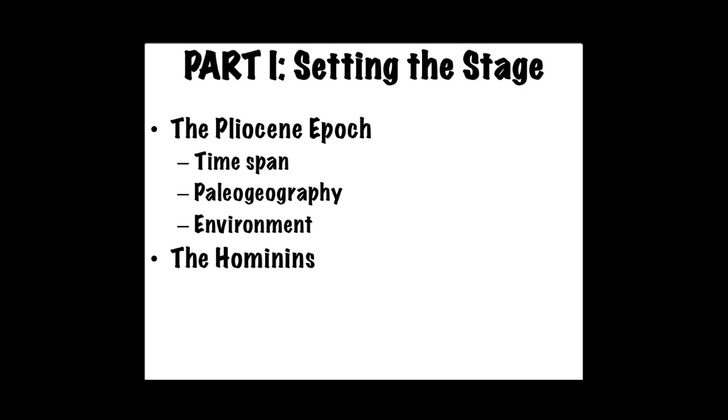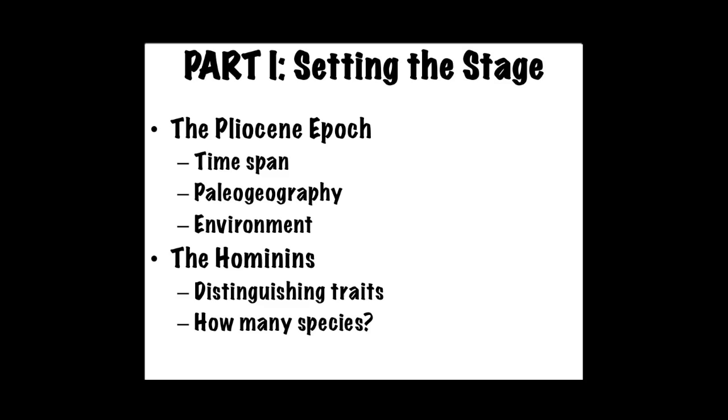Then I will discuss hominins — how do we distinguish a species as a hominin and not an ape or a monkey? What are the defining criteria to diagnose a species as a member of the hominin group? And then we want to see how many species we're talking about during the Pliocene, which raises the question of which one of them is our direct ancestor.